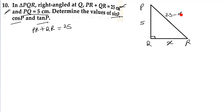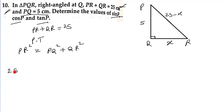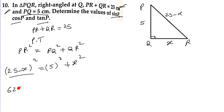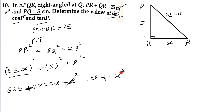For the value of x, we will use the Pythagoras theorem here. What does PR square mean? PR square is equal to PQ square plus QR square. Now PR square — if we suppose QR is x, then PR is 25 minus x. So (25 minus x)² = 5² + x². Now PR square is equal to 625 minus 50x plus x square, and x square cancels.